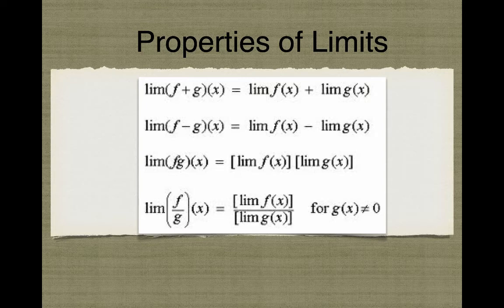If we have things multiplied together, we can break them apart again: the limit of f times g of x equals the limit of f(x) times the limit of g(x). The same applies to division: the limit of f over g of x equals the limit of f(x) over the limit of g(x). This last one works as long as g(x) does not equal zero, because we can't divide by zero.